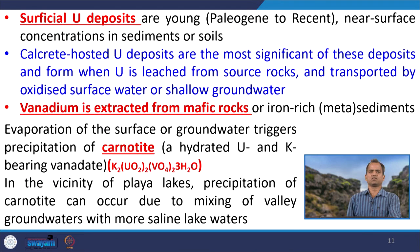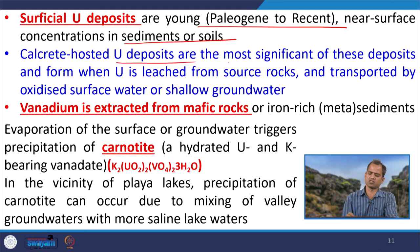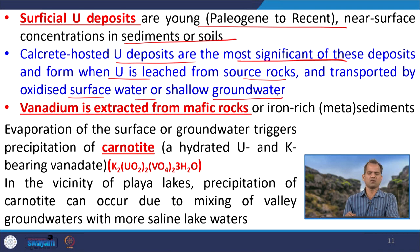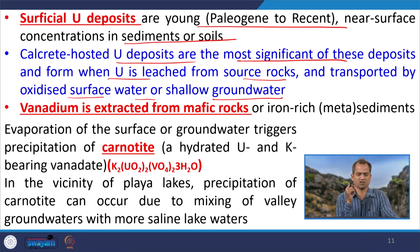Then there are surficial uranium deposits — mostly young, Paleogene or recent, near-surface concentrations in sediments or soil. Mostly it is calcrete-hosted uranium deposit that is the most significant of this kind. Uranium is leached from the source rock and transported by oxidized surface water or shallow groundwater. When it reaches a reducing environment, it gives rise to a uranium deposit. Calcrete, silcrete, and ferricrete are different terminologies used for these concretions — if it is calcium carbonate it is calcrete, if it is silica it is silcrete, and if iron it is ferricrete.